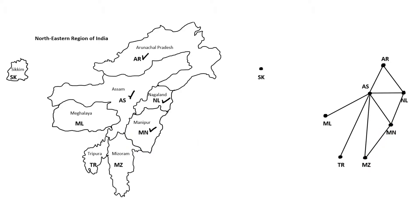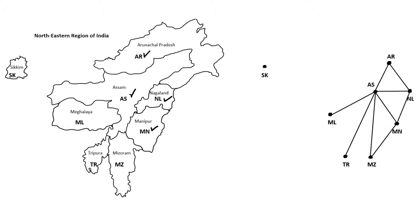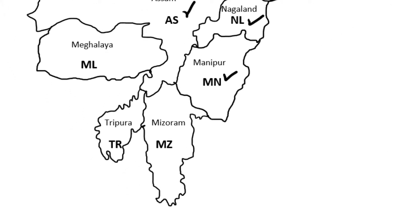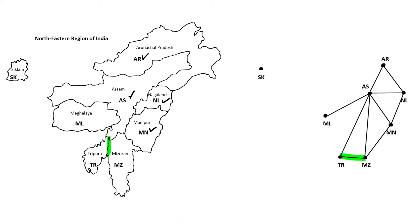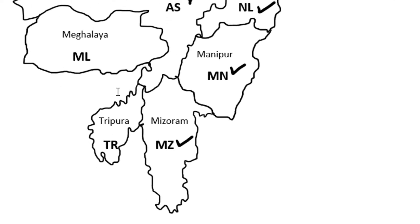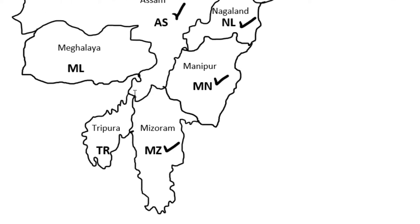Let's figure out which of the remaining states MZ shares a boundary with. MZ shares a boundary with TR right here, and everywhere else we're already looking at states that MZ has been connected to previously. So we just need to put in that one edge between MZ and TR. Then we're done with MZ. We'll look at TR. TR is only connected to states that we've previously looked at — AS and MZ. So we're done with TR.